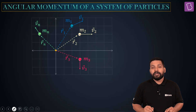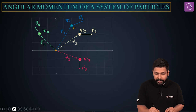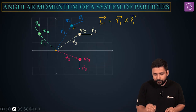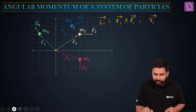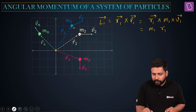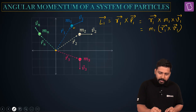For each of the individual particles there will be a value of angular momentum. For example, for this one, L1 vector is going to be equal to R1 vector cross V1 vector. I can write this further as R1 vector times M1 times V1 vector, or M1 times R1 cross V1. This will be for the first particle.